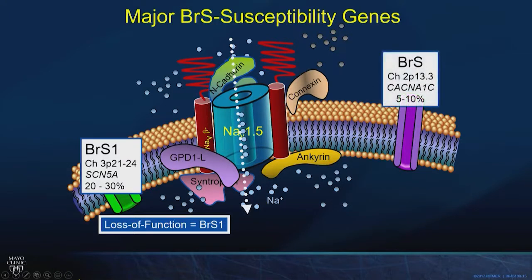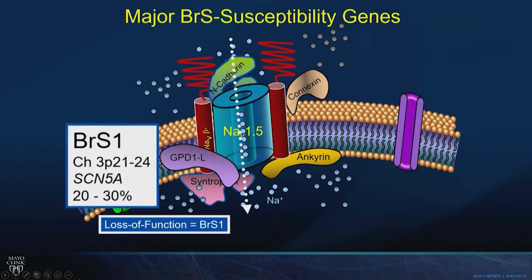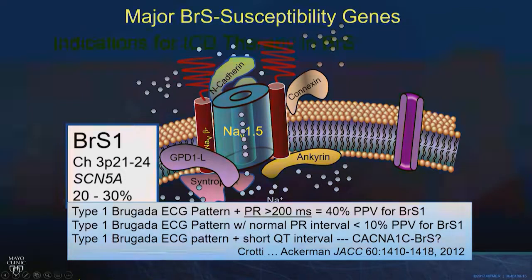There are 23 alleged Brugada susceptibility genes, but by ClinGen, 22 have been deemed insufficient evidence — leaving only SCN5A, which builds the sodium channel NAV1.5, as the only robust established genetic cause for monogenetic Brugada syndrome. A useful nugget: the yield of genetic testing depends not on the presence or absence of the type 1 Brugada pattern, but on the PR interval. If there is conduction delay with a prolonged PR interval, the yield is 40%. If the PR interval is completely normal, the yield is less than 10%.